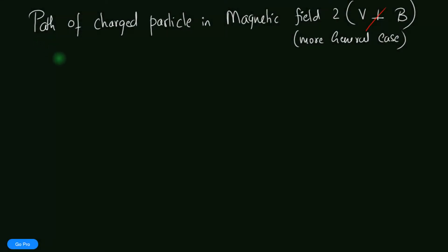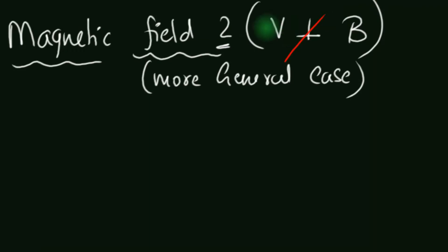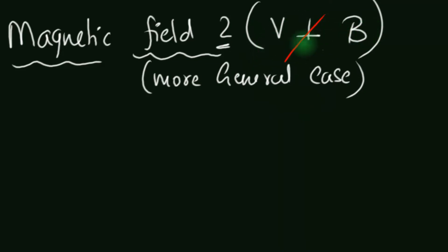In this video, we are again going to look at the path of a charged particle in a magnetic field. This is part 2. But notice, we are now considering a case where V is not perpendicular to B.